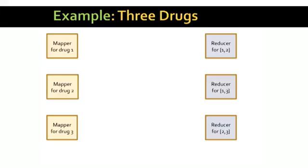We'll look at a baby example to see the idea. In this example, there are three drugs rather than 3,000. There will be three mappers, one for each of the three drugs. There are also three reducers, one for each of the pairs of drugs. It is a coincidence that the number of mappers and reducers is the same.